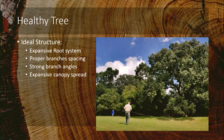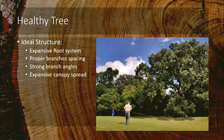A healthy tree has an ideal structure: an expansive root system, proper branch spacing, strong branching angles — which we'll talk about more — and an expansive canopy spread to capture sunlight. Sunlight is where the energy comes from; trees and other plants capture that sunlight energy and convert it to chemical energy, which they use to create new cells, grow, and store that energy.